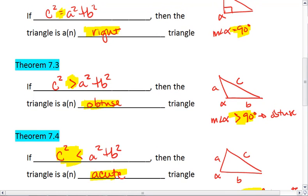What you notice is that this c value, this c squared value, really matters. And we have to make sure that we're using the largest side of the three for that c value.